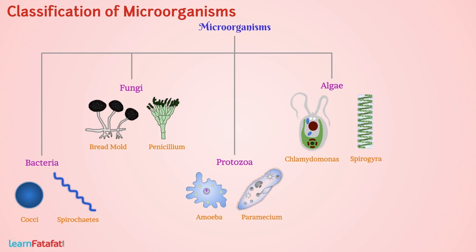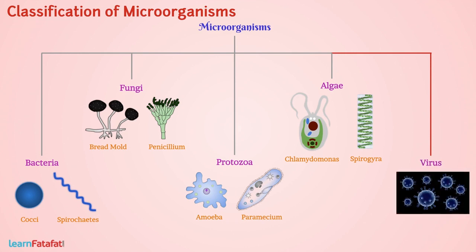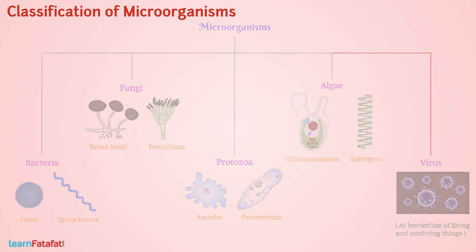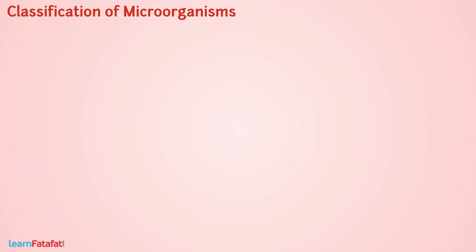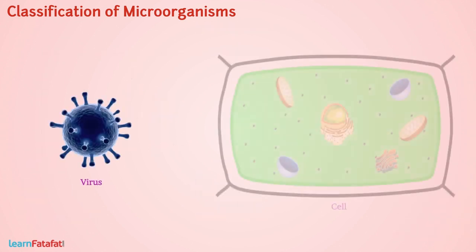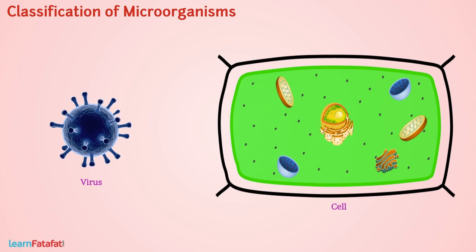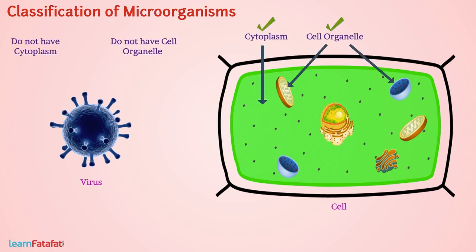Along with these groups, there exists a group of organisms called viruses, which are considered to be at a borderline of living and non-living things. This is because viruses do not have cellular structures such as cytoplasm or cell organelles, which is a feature of non-living things.